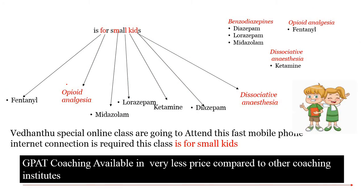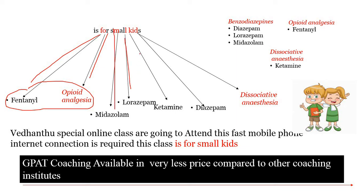From 'classes are for SMALL KIDS': F indicates Fentanyl, which is an opiate analgesic. M indicates Midazolam, L indicates Lorazepam, and D indicates Diazepam — these three are benzodiazepines. Finally, K indicates Ketamine, which is a dissociative anesthetic.